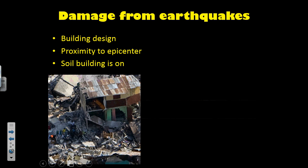The last factor that can affect the amount of damage is the type of soil the building is built on. A portion of San Francisco is built on loosely compacted sand, which goes through a process called liquefaction during an earthquake. This basically causes a lot of the water in the soil to rise to the surface, amplifying the shaking and causing buildings to collapse.